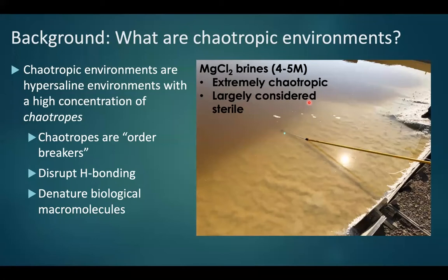Chaotropic environments are hypersaline brines with a high concentration of chaotropes. Broadly speaking, chaotropes can be thought of as order breakers, which disrupt H-bonding. In bulk solution, these will denature biological macromolecules, leading to cell death at high enough concentration.